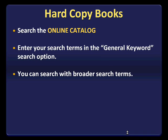You can search with broader search terms than you would when you're searching for articles. As we've seen in the past tutorials, when you search for journal articles in the databases, you need to be more specific about what you're looking for. However, when you're searching for books, you want to find the broad topic that would answer the questions related to your subject.